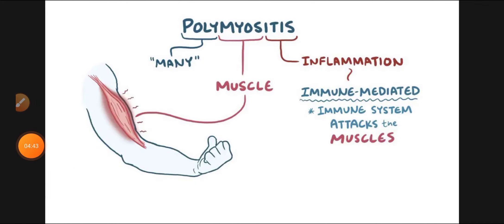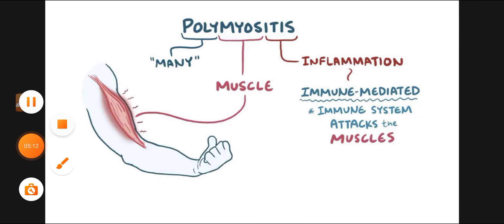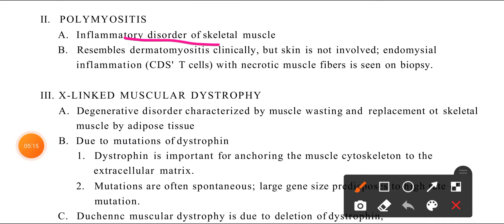After dermatomyositis, the next disease we study is Polymyositis. The name dermatomyositis refers to muscles plus skin inflammation. Polymyositis is inflammation of multiple muscles in the body. It is clinically similar to dermatomyositis, but the skin is not involved — so heliotrope rash, Gottron papules, and malar rash are not present.